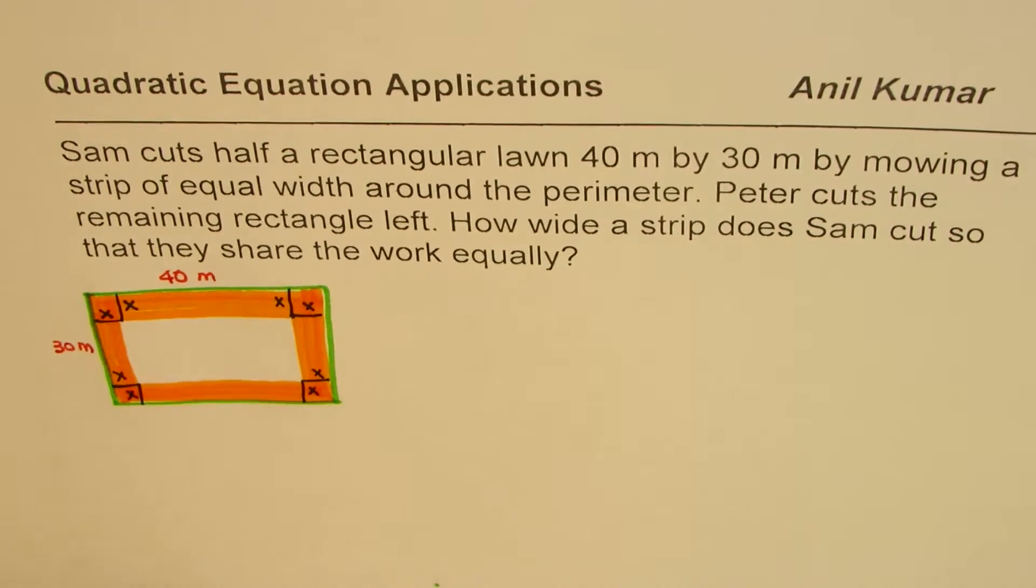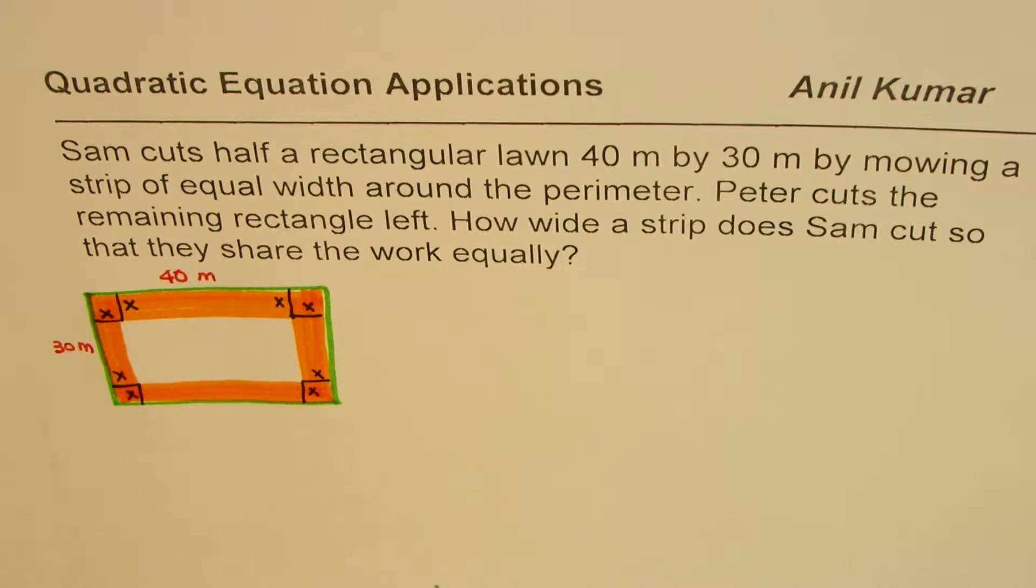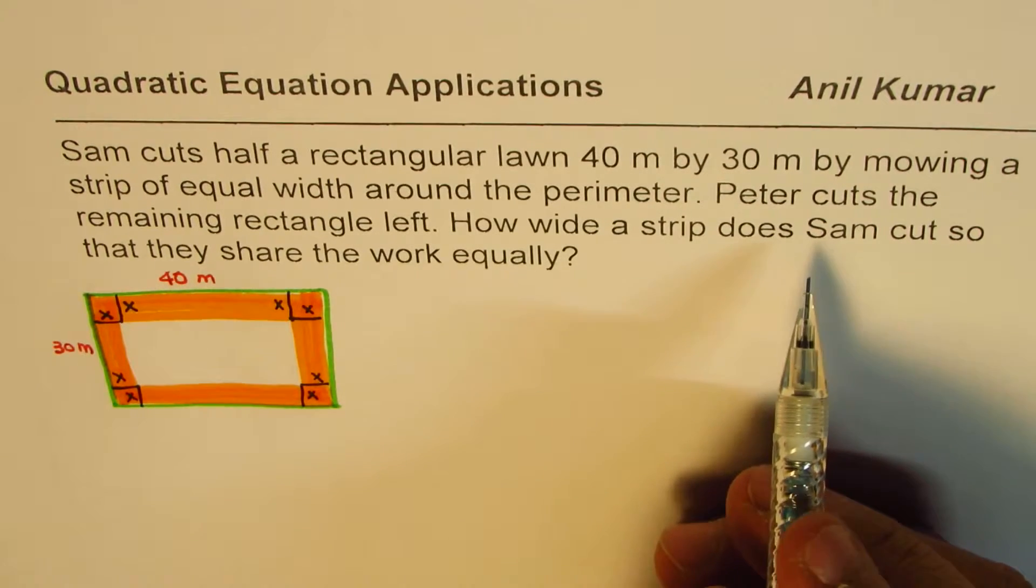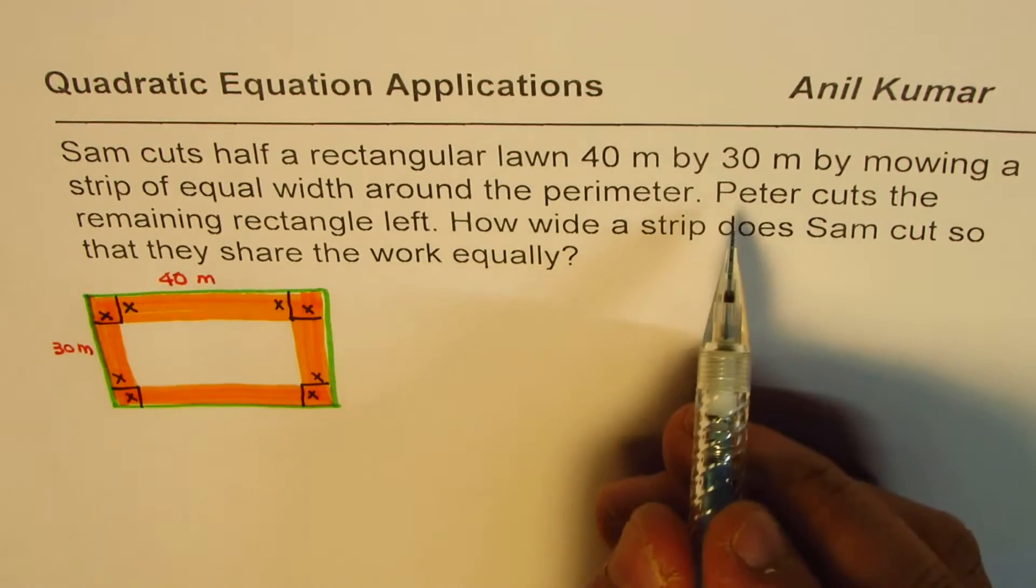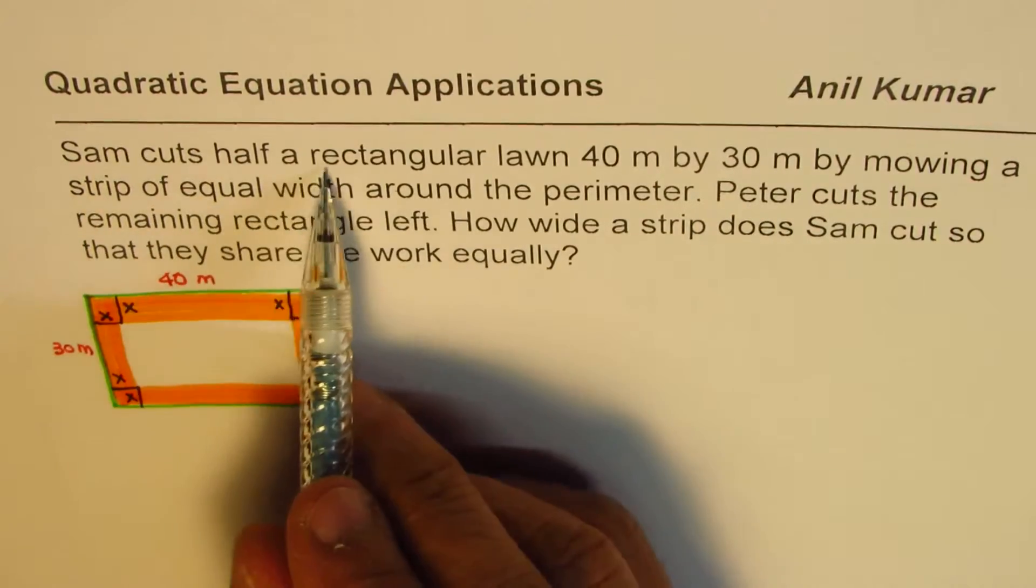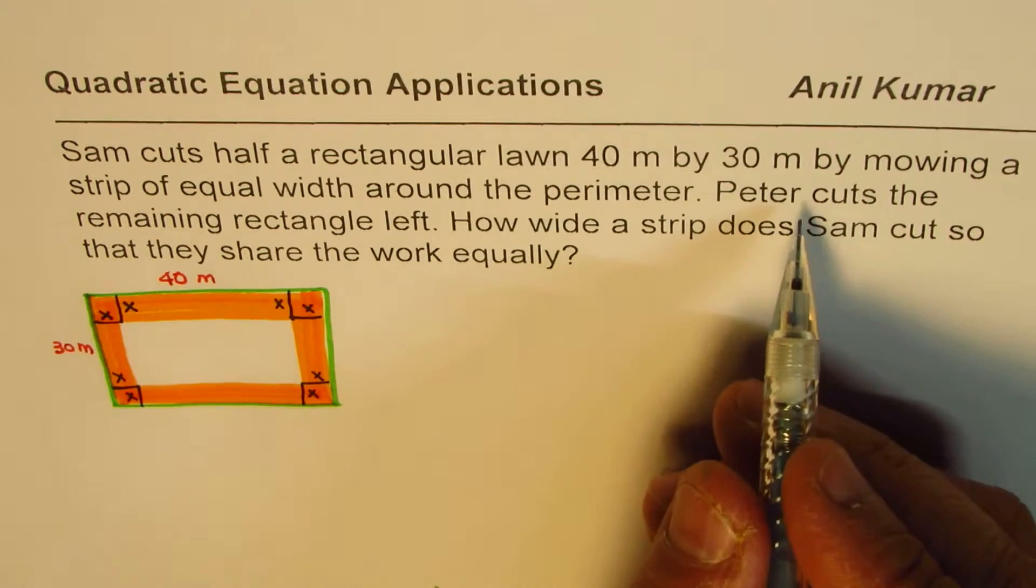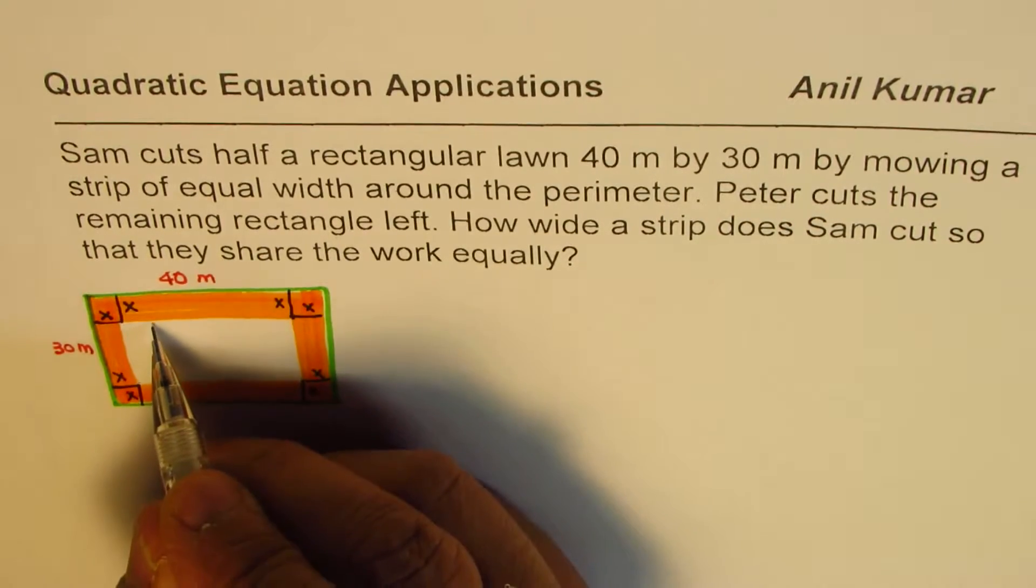Now what is Sam doing? Sam is actually doing the rest of it. Sam cuts the rectangular half outside, which is done by Sam. Inside by Peter.